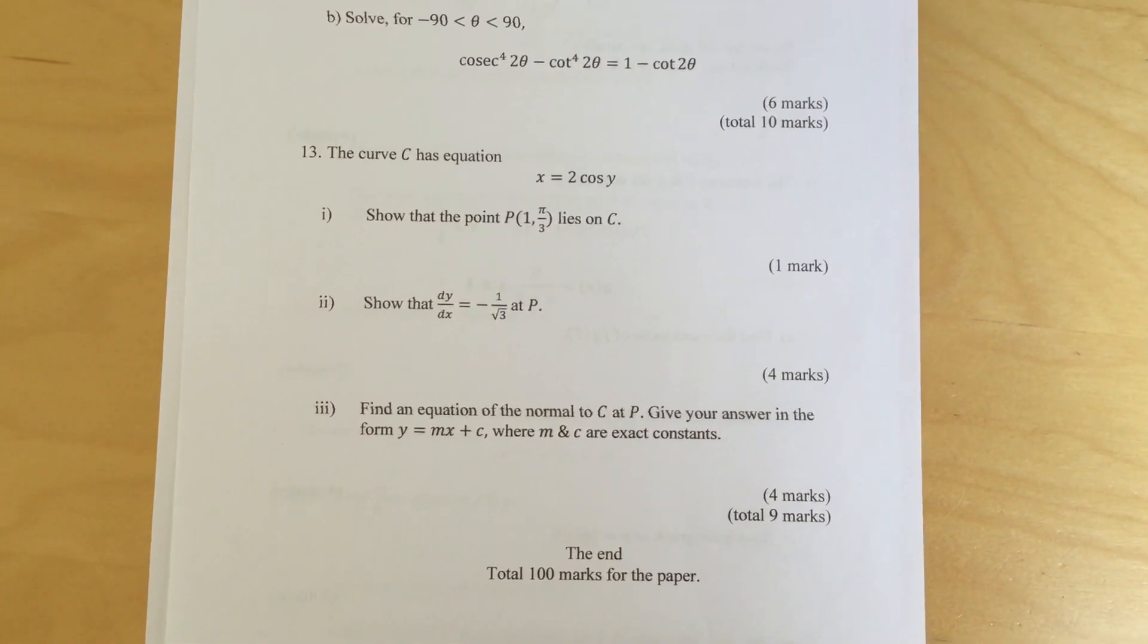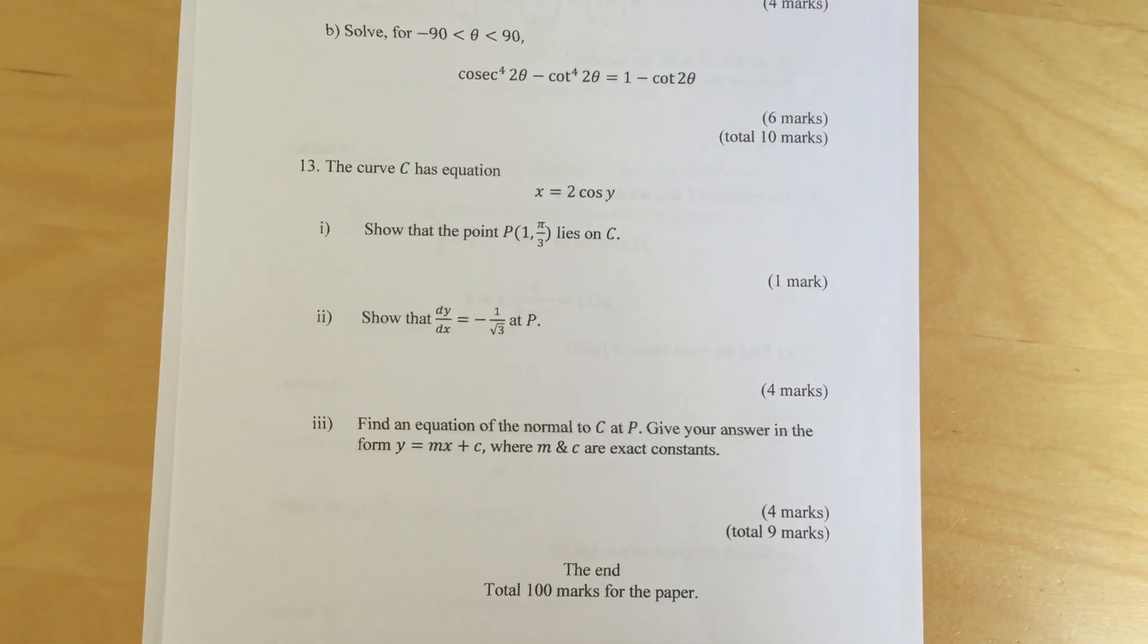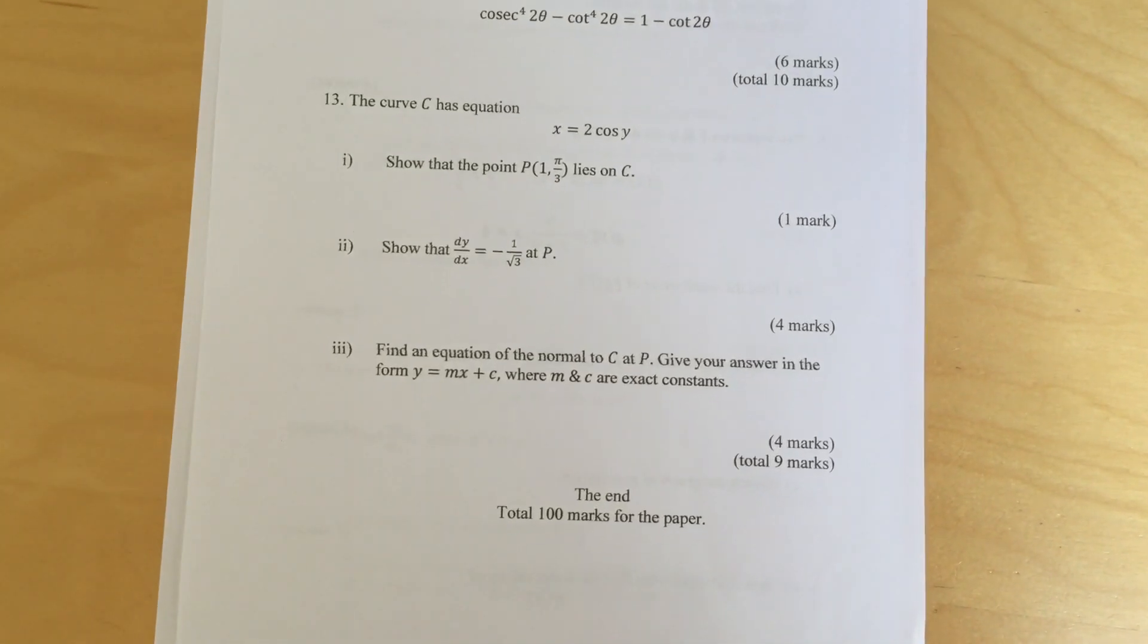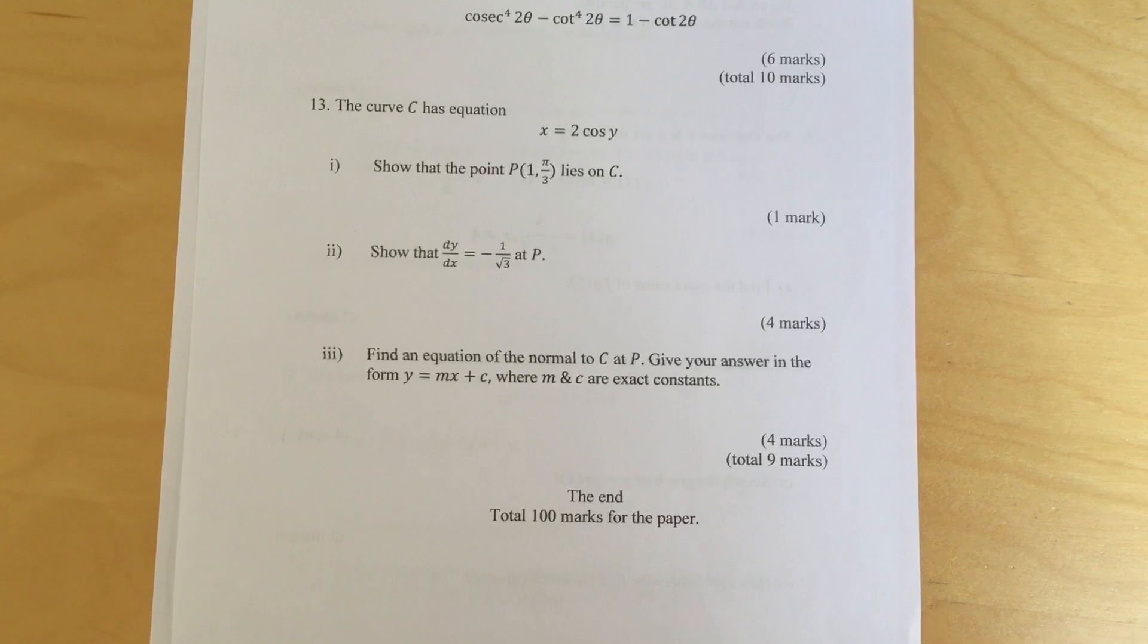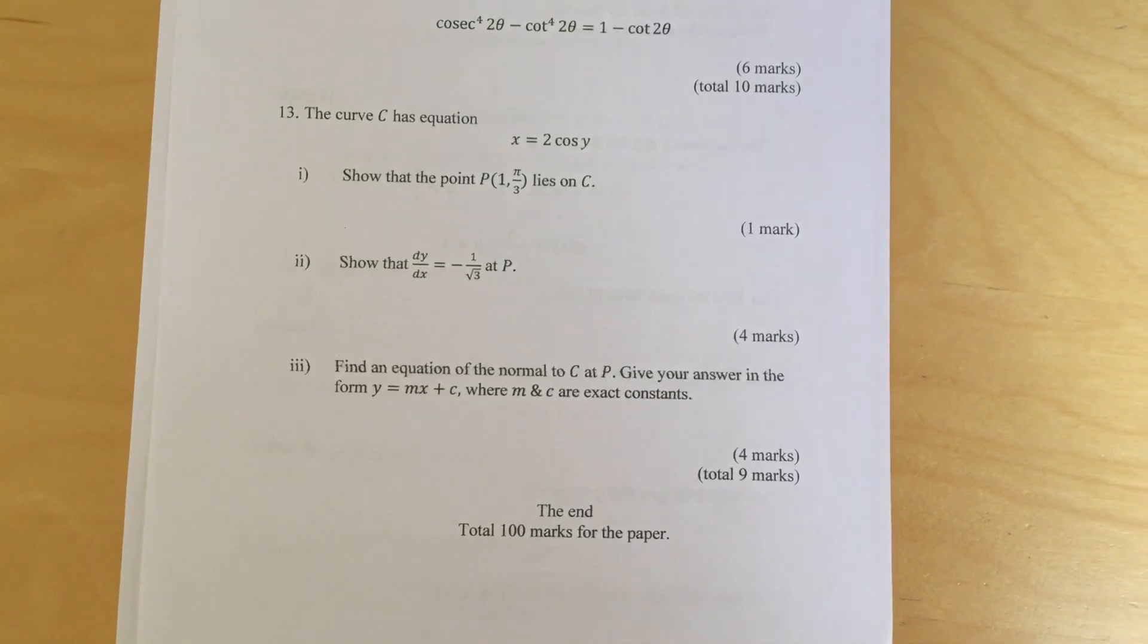Question 2: Show that dy dx equals minus 1 over root 3 at p. Part 3: Find an equation of the normal to c at p. Give your answer in the form y equals mx plus c where m and c are exact constants.